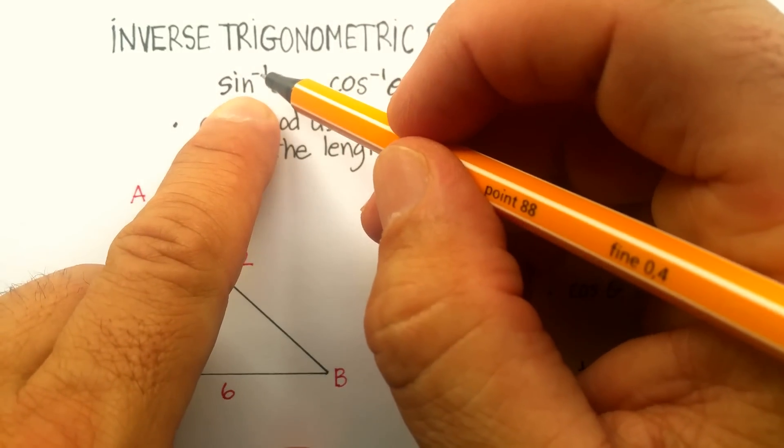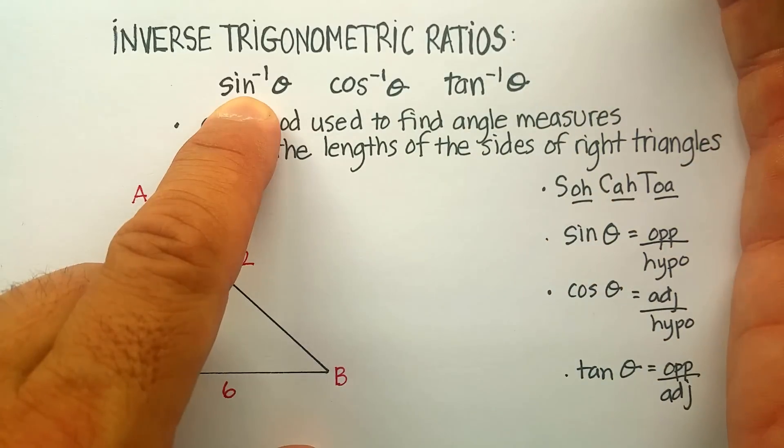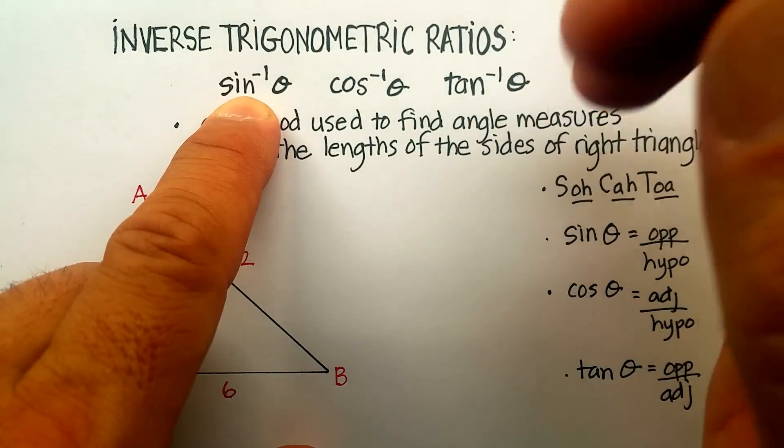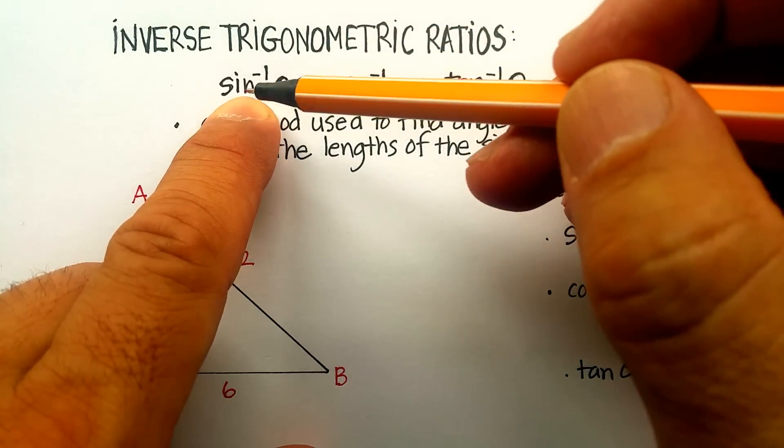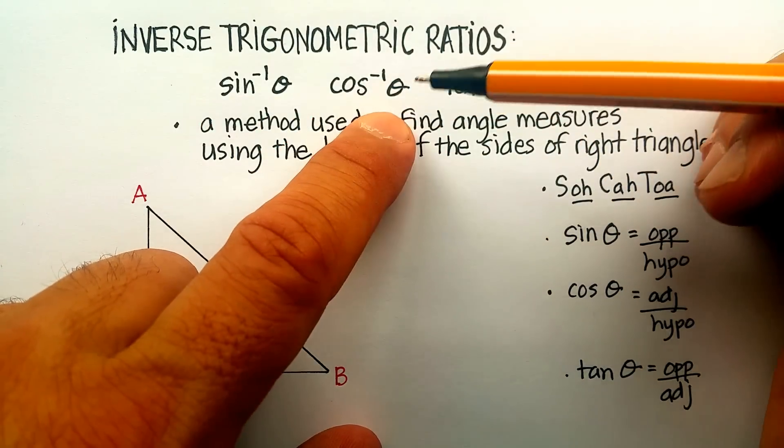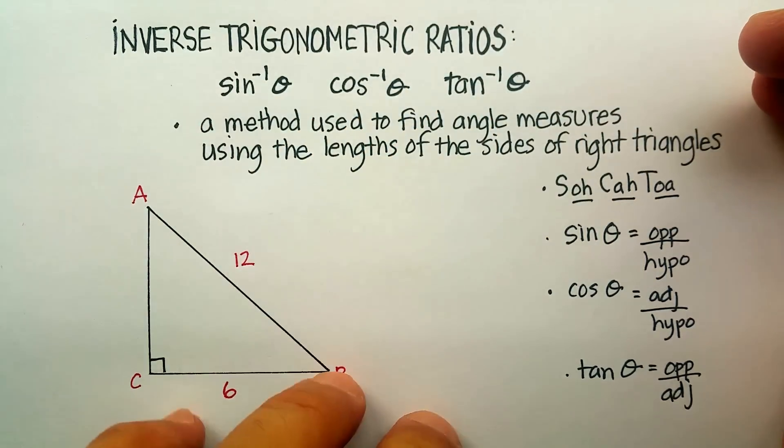This basically just means the inverse. When you raise something to the negative one, it's like putting it like one over whatever this might be. So it's like one over sine, one over cosine, one over tangent.